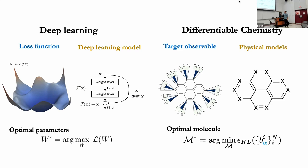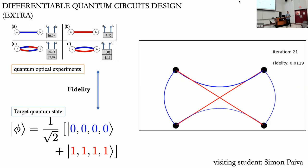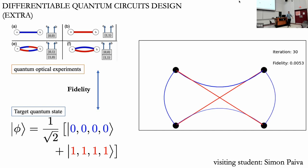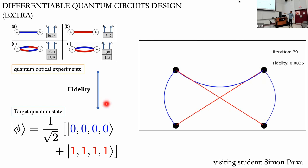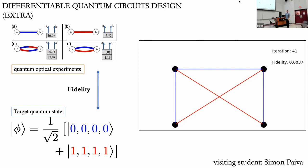We can also apply this to quantum circuits. A student from Chile — a physicist — is working in my lab on the design of quantum optical circuits: how do I connect photon detectors so that it reproduces a target quantum state? The fidelity is simply about how things are connected — again, another graph. We can differentiate graphs nowadays, and we end up with a quantum optical circuit specifying which photons must be connected with which operations.